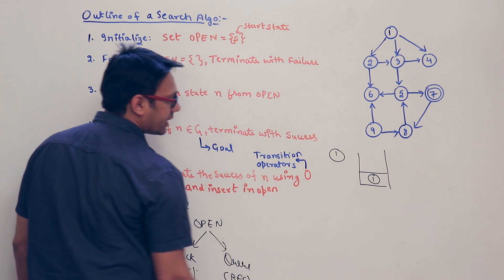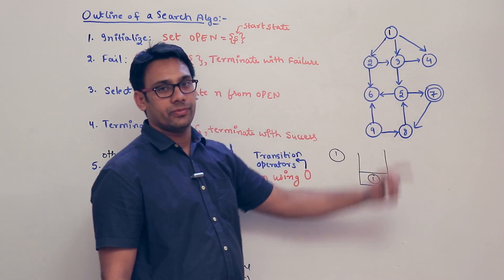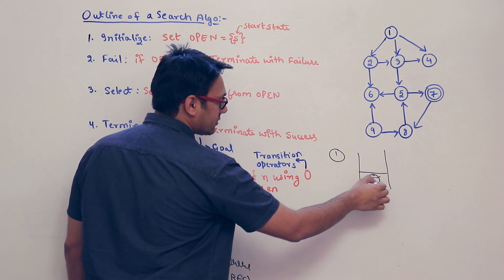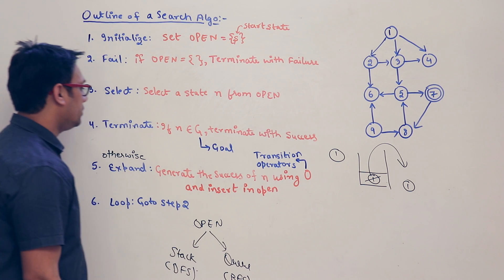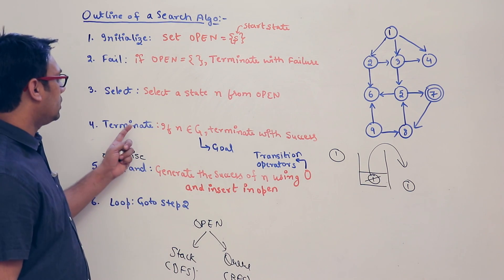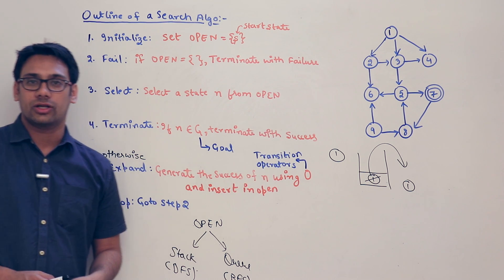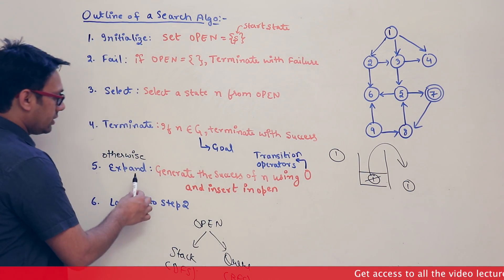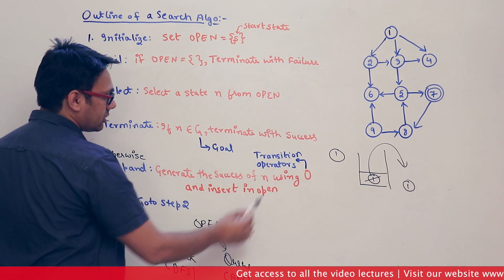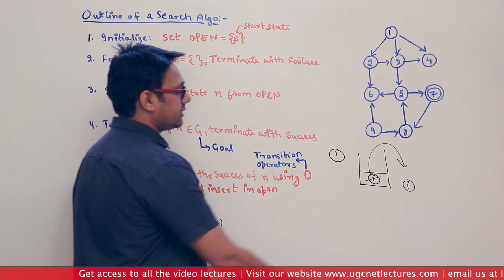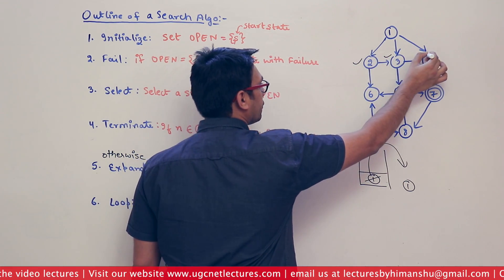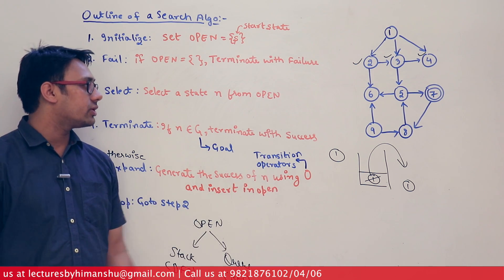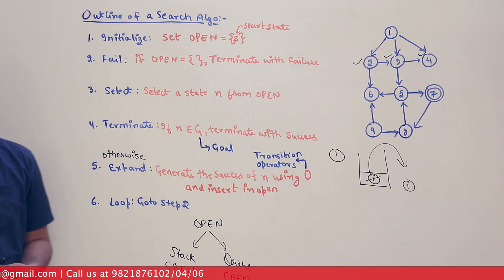Open is not empty — it contains node 1 — so the termination condition fails. We go to 'select a state n from open' and take node 1 from open. Now we check: terminate if n is a goal state. Node 1 is not the goal state, so we expand — generate the successors of n using the operators and insert them in open. The successors of 1 are 2, 3, and 4, so we put 2, 3, and 4 into open.